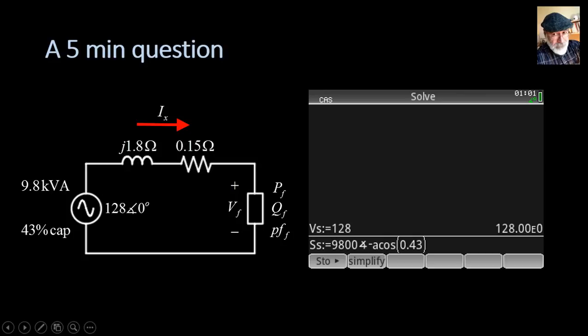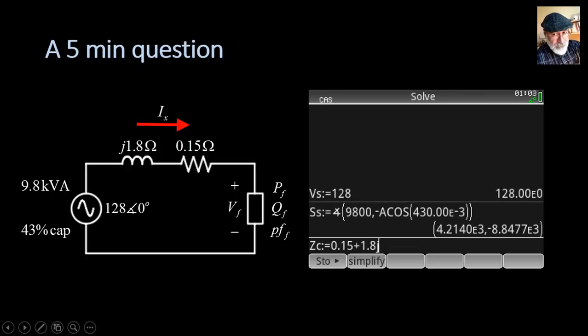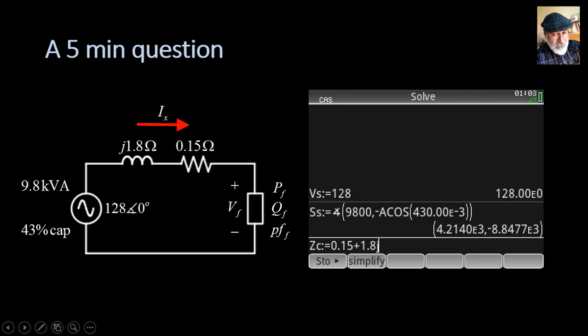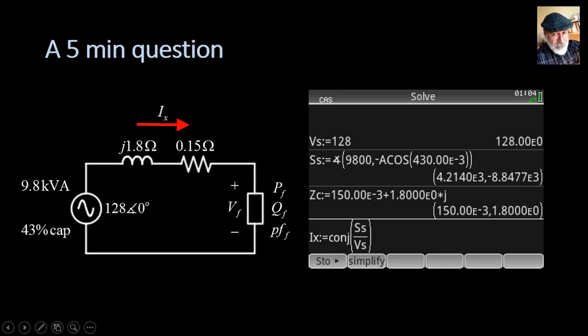The impedance of the cable is 0.15 plus 1.8j. And now Ix is the complex conjugate of the complex power of the source divided by the voltage of the source.